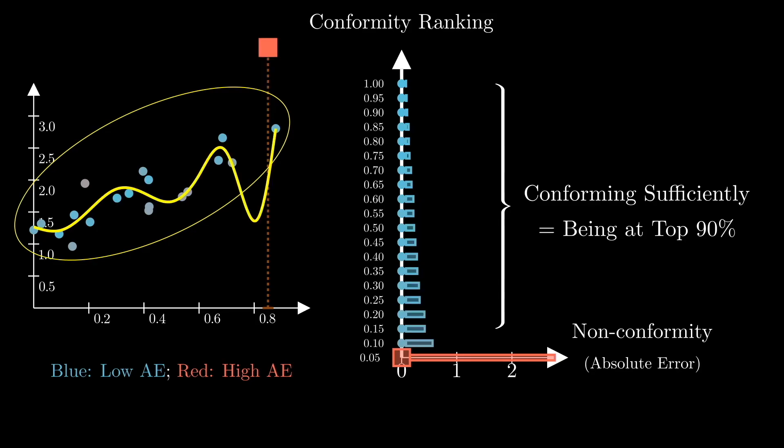So making the square the only point excluded from the bag, thus not seen by the model, lifts the burden of refitting but puts the square at a significant disadvantage against the other points in terms of its non-conformity. And we should avoid it, otherwise our prediction sets will be too narrow to satisfy the coverage validity condition.